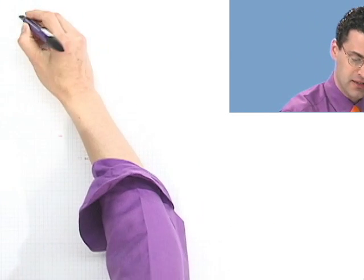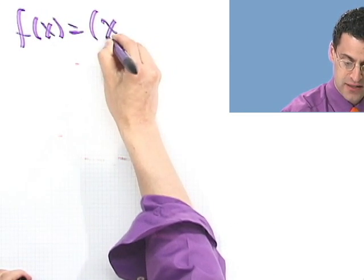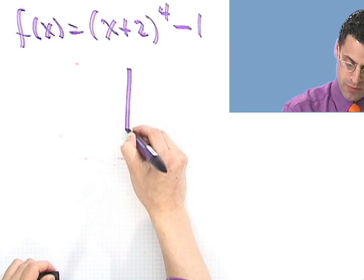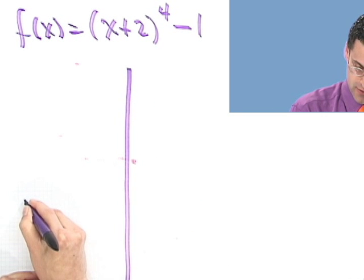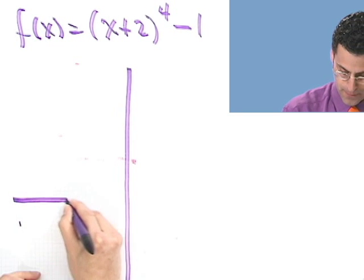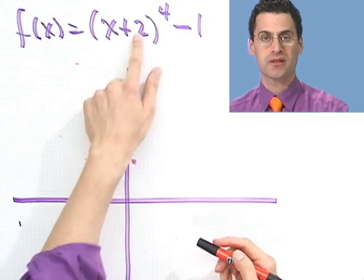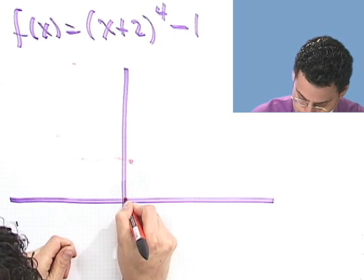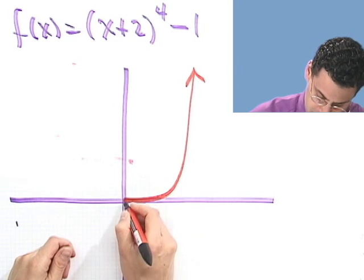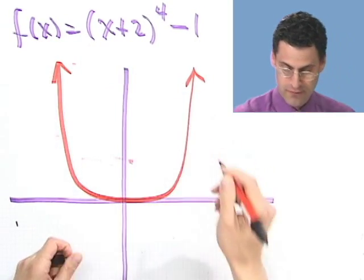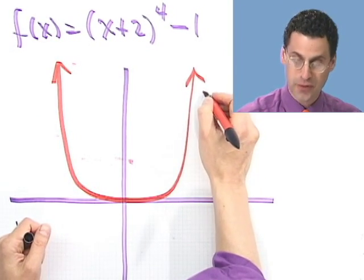One last example: f(x) = (x+2)⁴ - 1. I'll work through a whole bunch of intermediate steps. First, what's x to the fourth? That's sort of like a parabola but more exaggerated — a dramatic parabola. You can plot points if needed, but it's a dramatic, very symmetric parabola shape. That's just x to the fourth — not what I want yet.